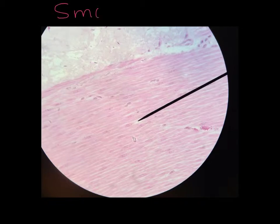Smooth muscle is one of our involuntary muscles, so you cannot control it. You find it in organ walls like your GI tract, and in the walls of blood vessels, and so on.